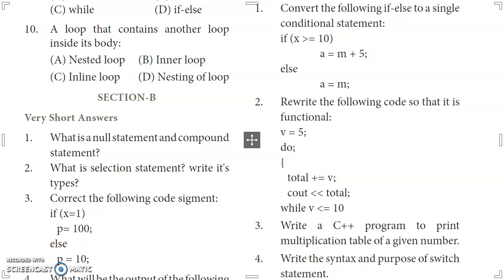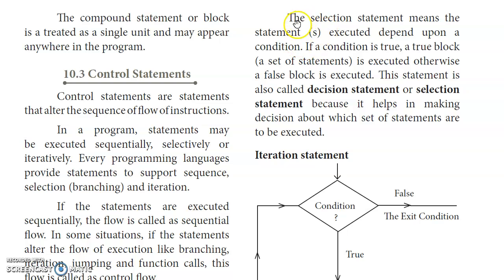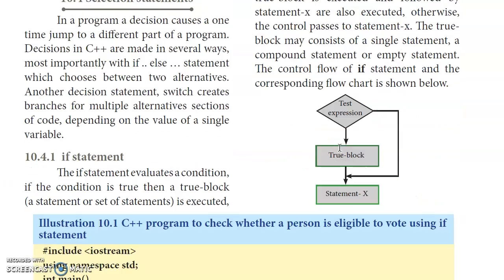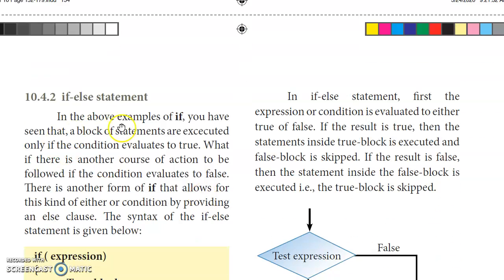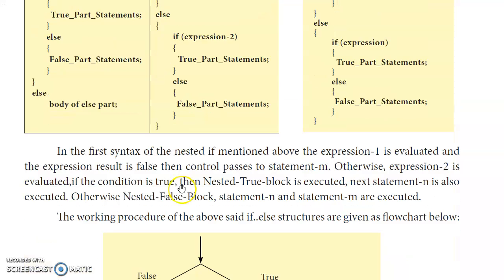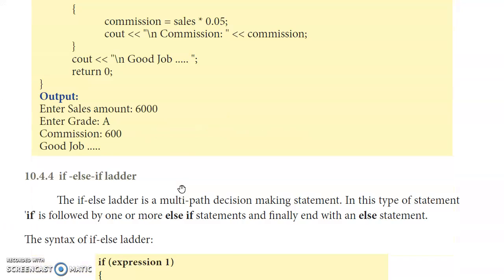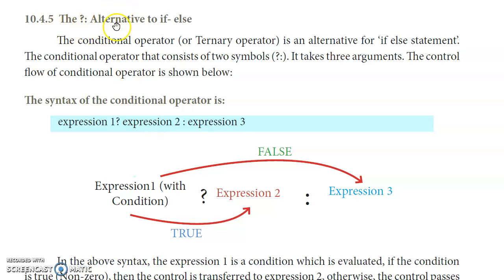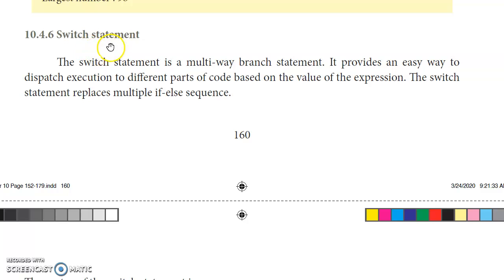Second question: what is the selection statement? Write its types. From page 153: the selection statement means the statement gets executed depending upon the condition. If the condition is true, the true block is executed; otherwise, the false block is executed. The types are: if statement, if-else statement, nested if statement, if-else-if ladder, and the ternary operator — totally five types.